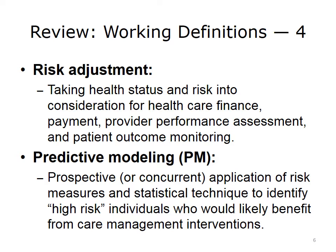Predictive modeling in the population health context makes use of available risk data and statistical analysis to array a population based on our understanding of likely outcomes. Once one has predicted who is going to be at risk — let's say for hospitalization or a bad outcome such as death or increased disease — we array our population into what is frequently termed a population risk pyramid. In this pyramid, we array all individuals in a cohort from low to high in terms of the predicted outcome of interest.